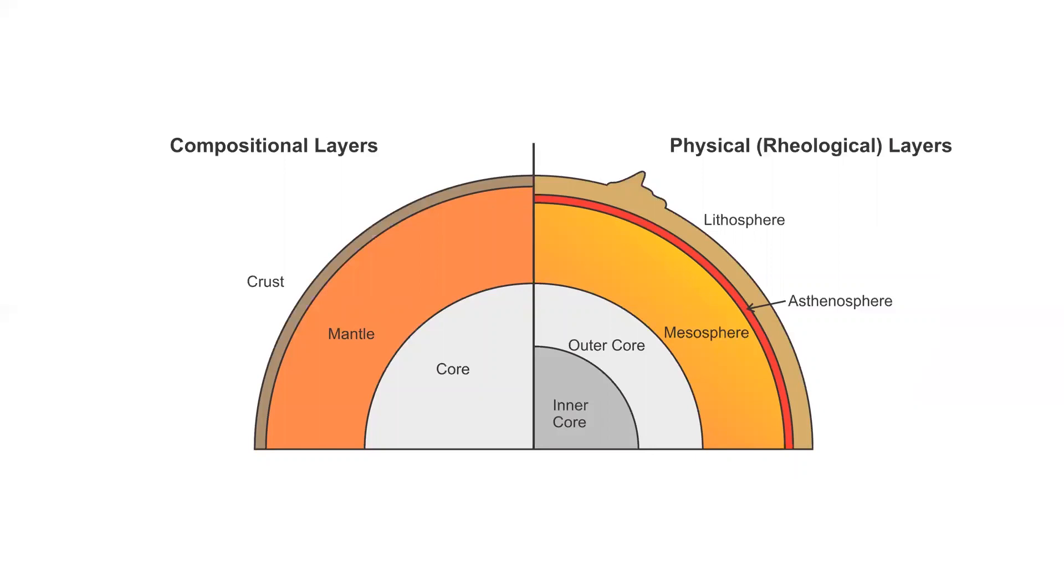We will talk more about this in a second, but I just want to point out that when we are talking about tectonic plates, we refer to the broken pieces of the lithosphere. Another thing I would like to emphasize here is, as you can see in the simplified figure that I made, there are some overlaps within these layers. For example, the lithosphere layer overlaps with the crust and the upper part of the mantle. That's the layering of our planet.